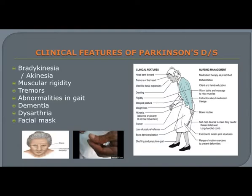Tremors — or shaking — usually begin in a limb, often involving the fingers or head at rest. This also produces pill-rolling tremors, where the patient rolls a pill or small object between the thumb and index finger. These patients also show a stooped posture and difficulty with balance, leading to gait abnormalities. Dementia involves memory loss with decline in thinking. Dysarthria is characterized by a speech problem. Facial mask is marked by an expressionless look with decreased autonomic movements, such as smiling and blinking.